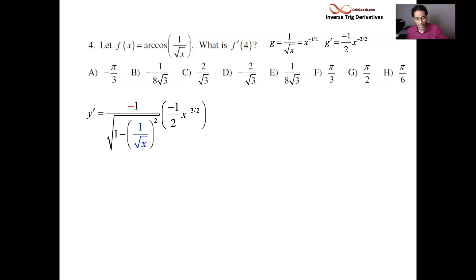Well, let's go ahead and square it. 1 over root x, and we square that. We just get 1 over x. So, go ahead and replace that. We'll have a negative 1 over the square root of 1 minus 1 over x.